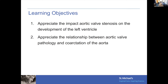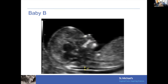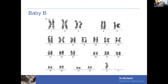Next learning objective: appreciate the relationship between aortic valve pathology and coarctation of the aorta. Speaking of genetic syndromes, this is Baby B. In utero, a nuchal translucency was measured at 12 weeks gestational age — the higher the number, the greater the likelihood of a genetic condition or congenital heart defect. Because of the increased nuchal translucency, the fetus underwent genetic testing, and this was the result.